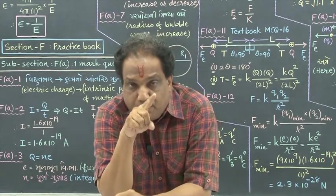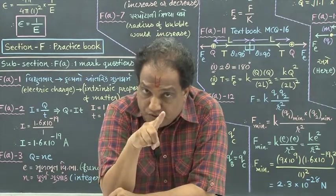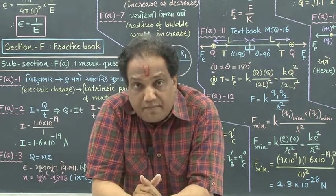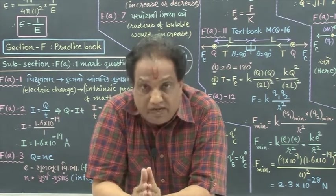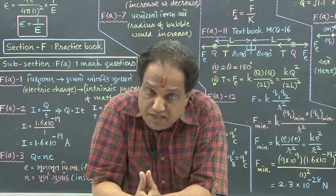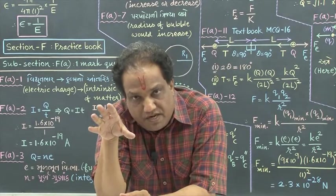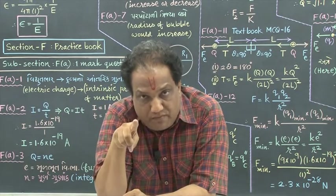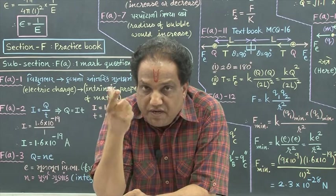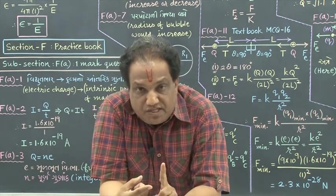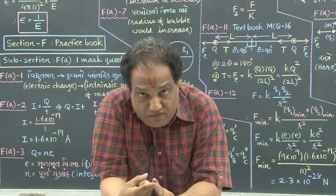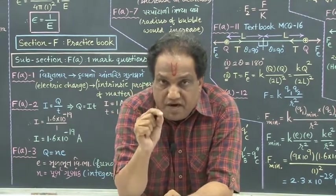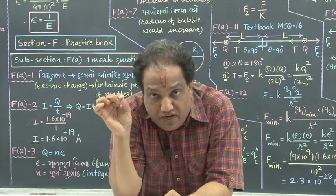Keeping this point in mind — that vacuum allows a given charge to have maximum strength of electric field and other media, depending upon their type, allow weaker electric field as compared to vacuum — in vacuum you can have maximum strength of electric field; in other media you have rather weaker electric field for the same charge. So keeping this point in mind, here is how we have introduced the concept of permittivity: the measure of the reciprocal of the capacity of a given medium to allow electric field lines to pass through it is given by a physical quantity called permittivity of that medium.